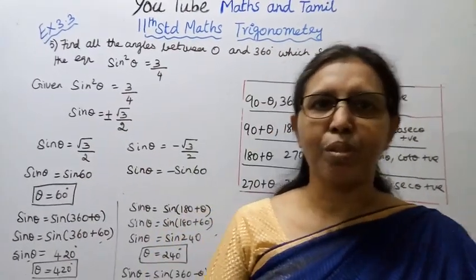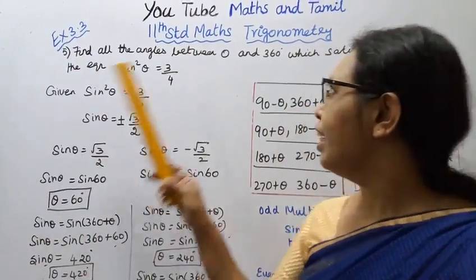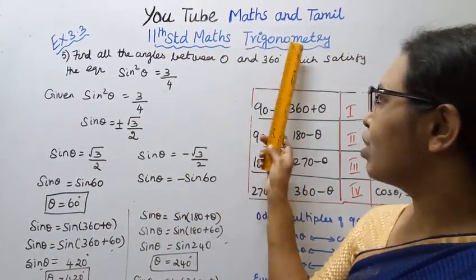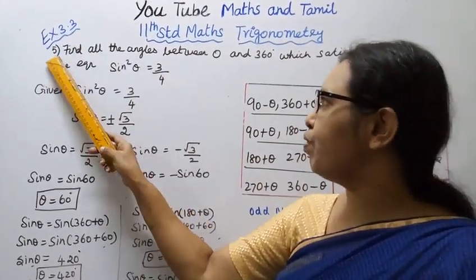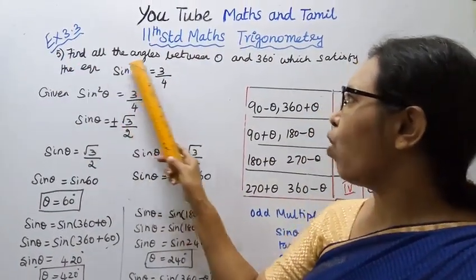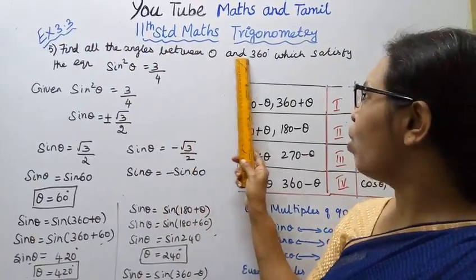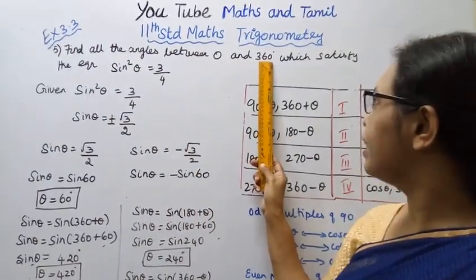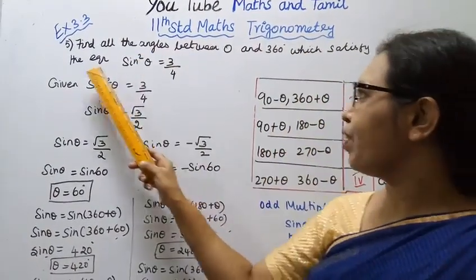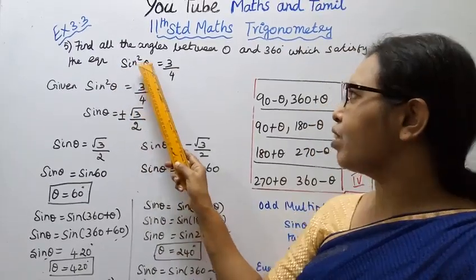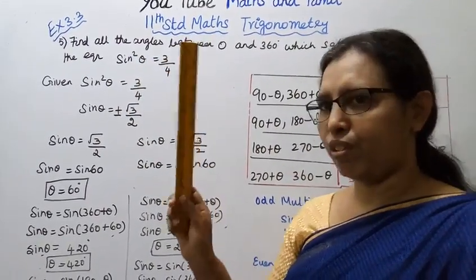Hello students, welcome to Max and Tamil channel. 11th standard Max trigonometry, exercise 3.3 fifth sum. Find all the angles between 0 and 360 degrees which satisfy the equation sin squared theta equal to 3 by 4.